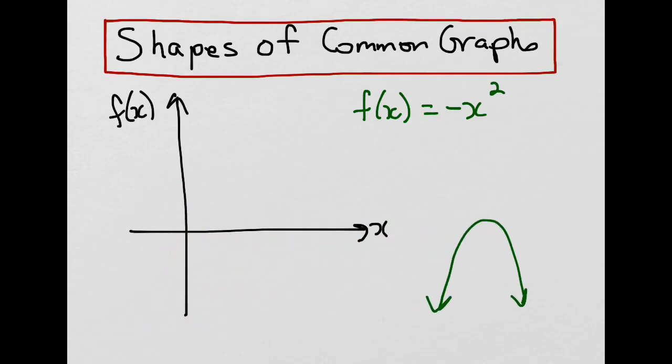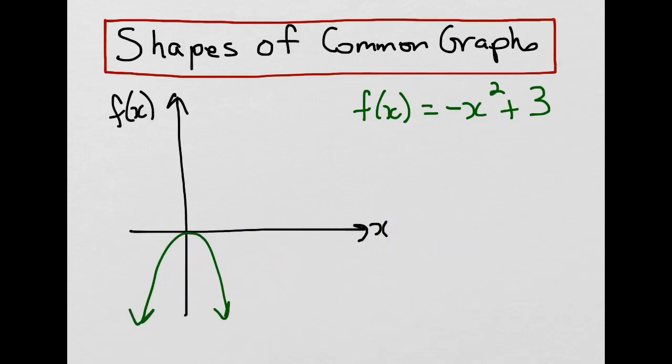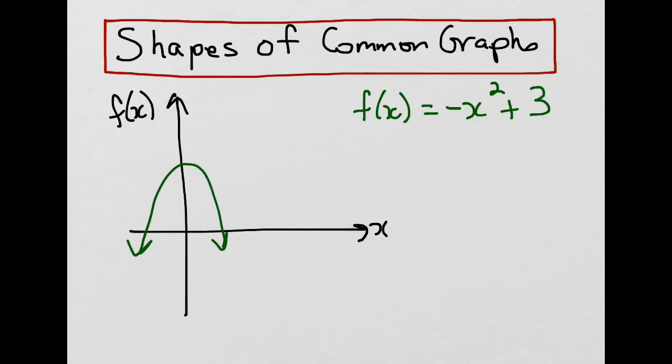Let's add 3 to our parabola, making it negative x² plus 3. It's still going to be negative and still going to open down, but just like before, we start at (0, 0) and go up 3 units in the y-direction. It has 2 possible solutions or intercepts, and we can see them here — those are the intercepts.